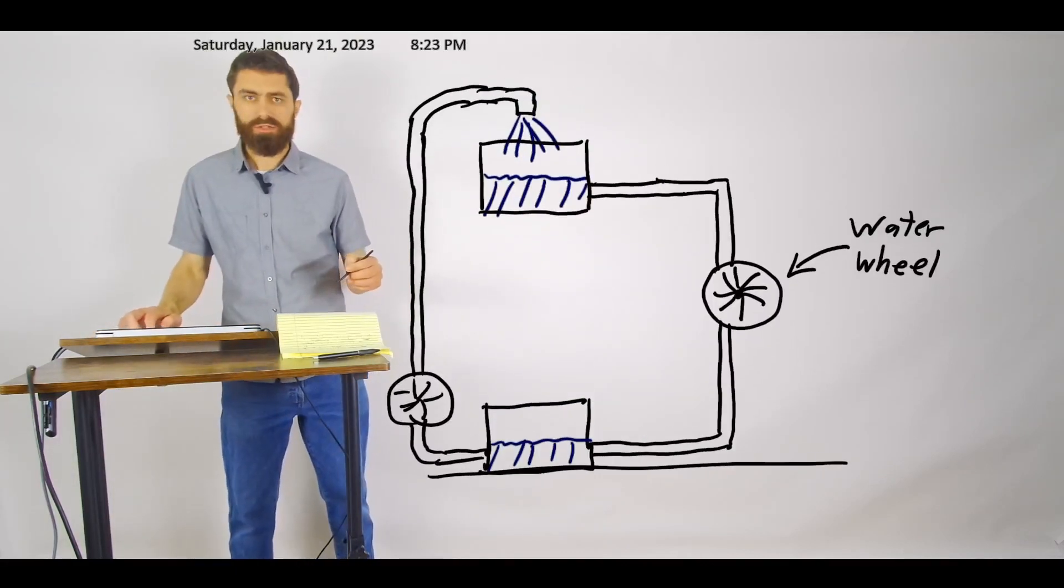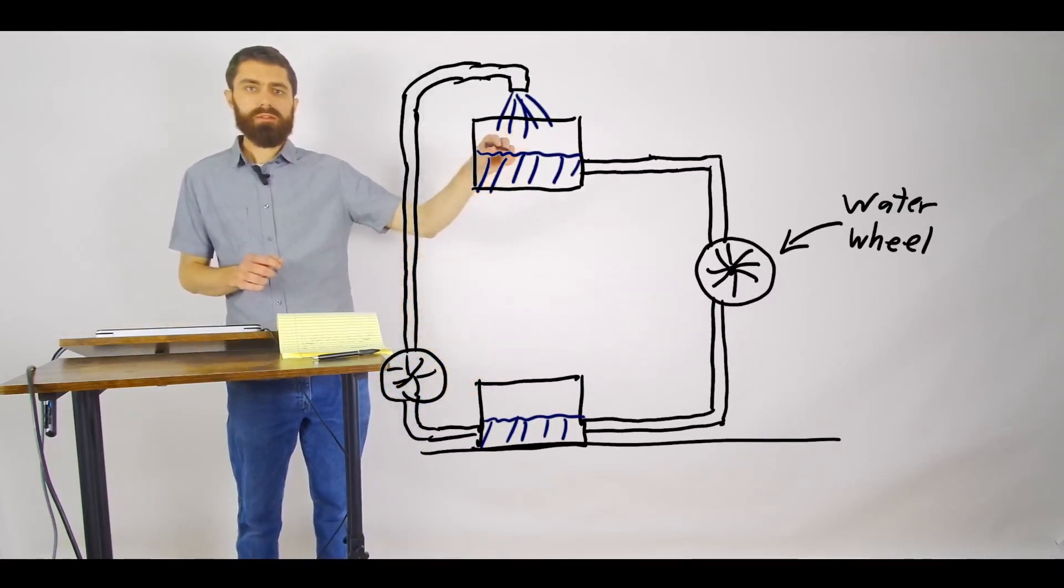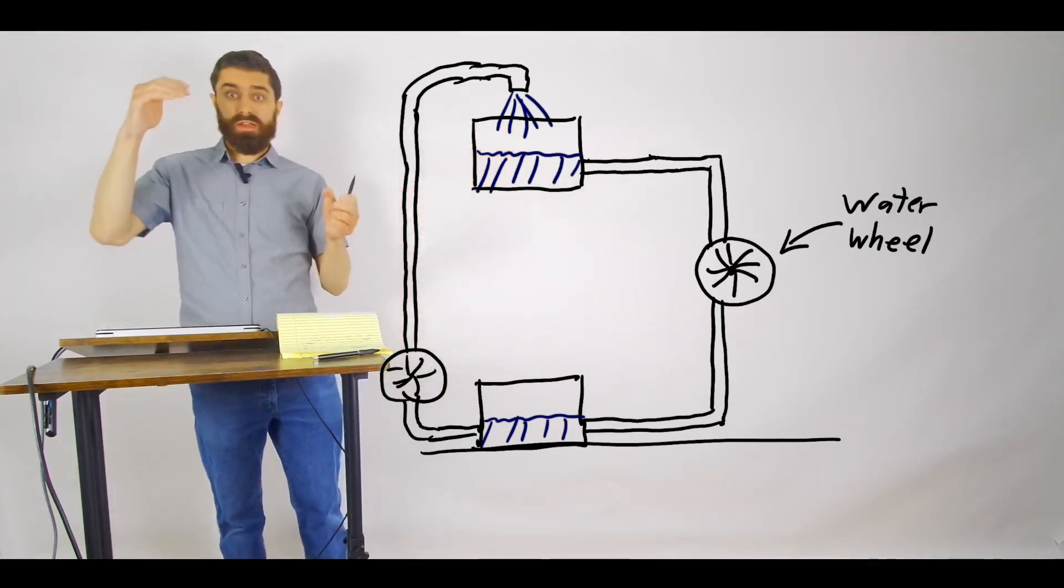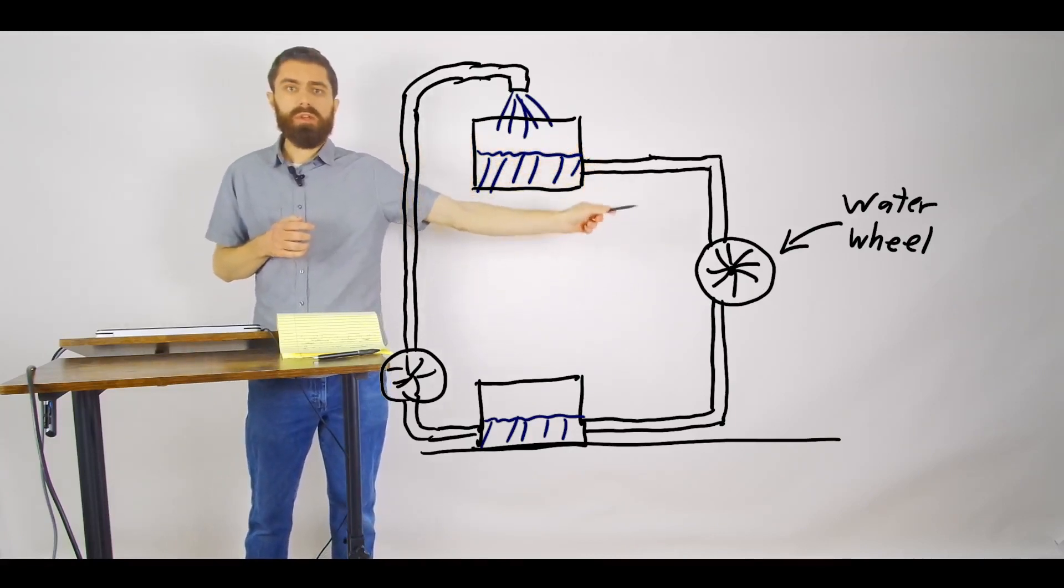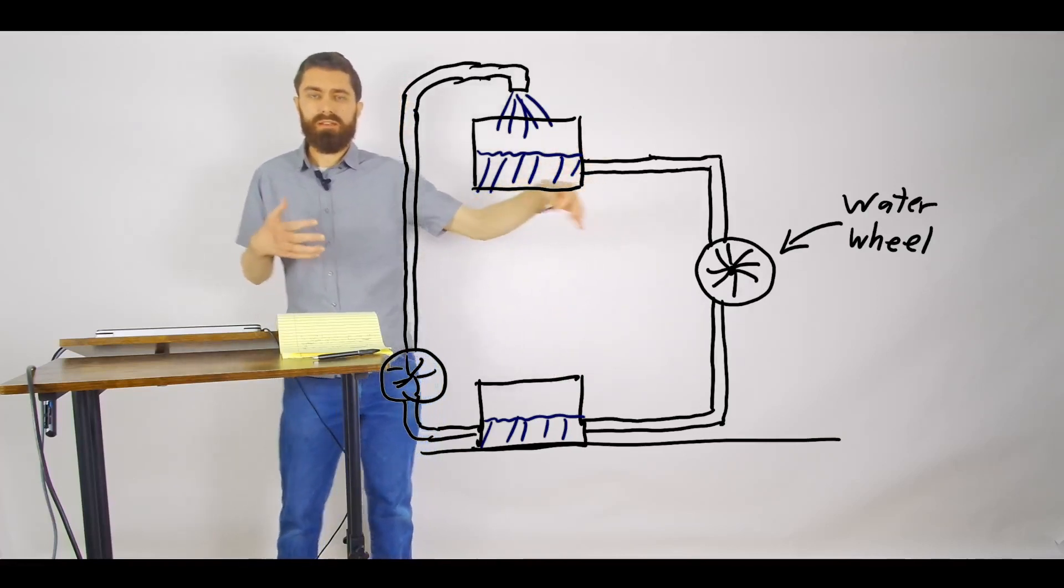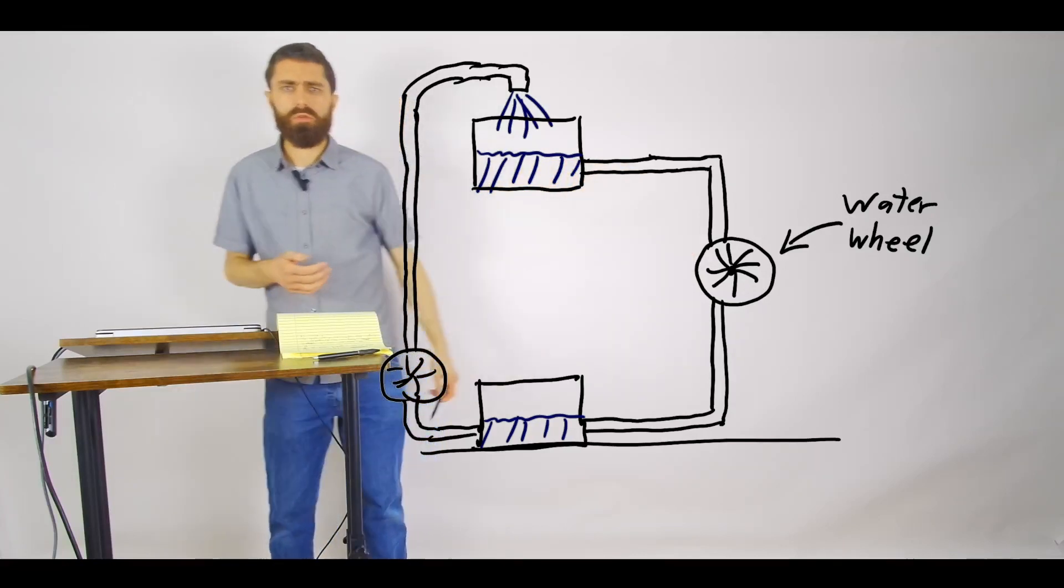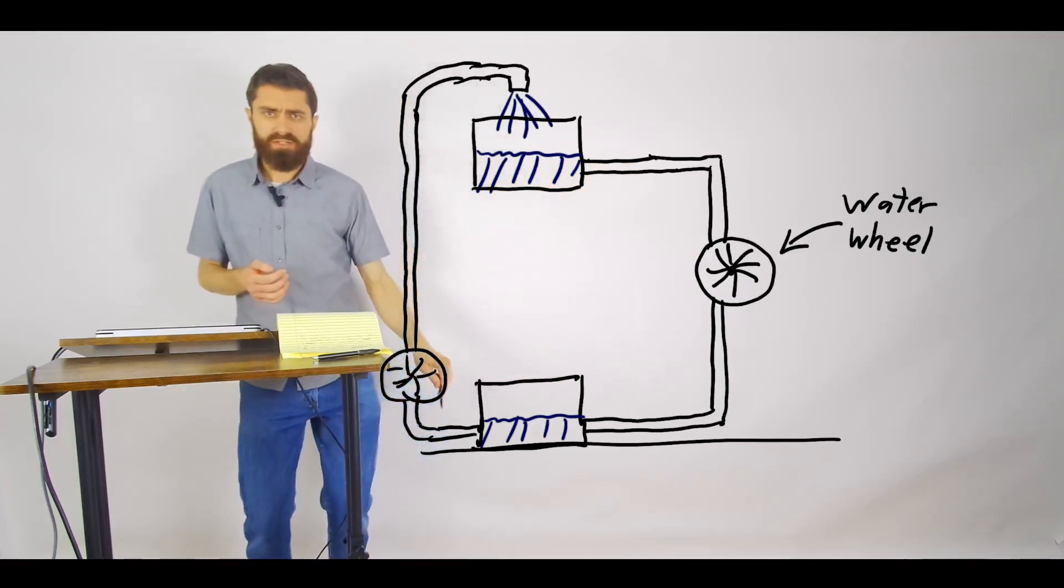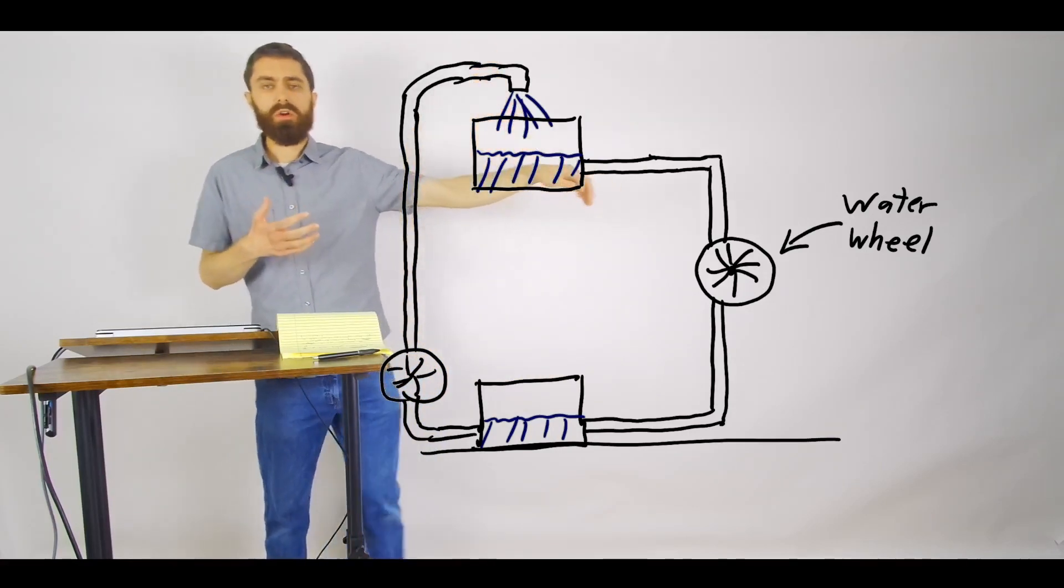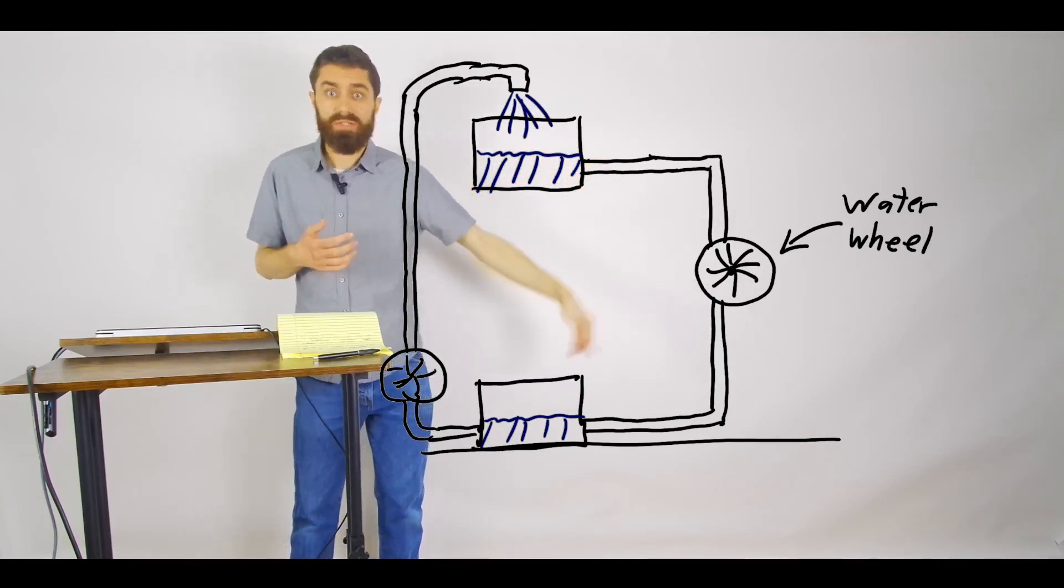So essentially you've got water flowing from the upper tank to the lower tank because they're at different heights. And so the water's falling through and then it spins this turbine. So it converts that potential energy, that stored potential energy in the water, into some sort of useful work of some kind. And then it gets repumped back up into this tank, and then again it releases and falls down again and releases that potential energy.